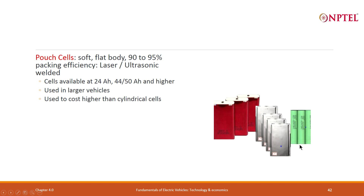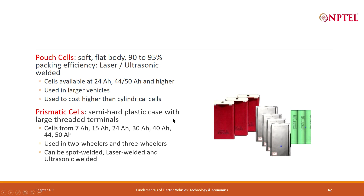Pouch cells used to cost higher than cylindrical cells, but not necessarily anymore. In larger vehicles, you invariably use pouch cells. Then there are prismatic cells — a semi-hard plastic case with large threaded terminals. Cell capacities are 7 AH, 15 AH, 24 AH, 30, 40, 44, 50, and new ones are 60 and 65 AH. A lot of them are used in two-wheelers and three-wheelers. They can be spot welded, laser welded, or ultrasonic welded. Pouch cells have to be laser welded or ultrasonic welded — spot welding is somewhat difficult. So these are the three kinds of cells, each with pluses and minuses depending on the manufacturer.